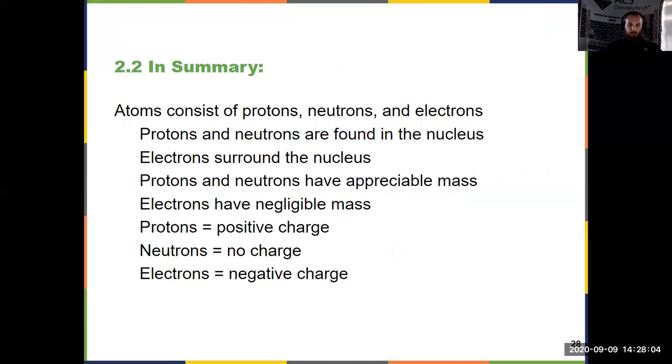Summarized, in addition to knowing where they came from, you should know this information from 2.2. Protons and neutrons are in the nucleus. Electrons surround the nucleus. Protons and neutrons have appreciable mass. Electrons do not. Protons are positively charged. Neutrons are neutral. They have no charge. And electrons are negatively charged. And we will use that information moving forward to build our understanding of chemical identities and chemical symbols in our next video.